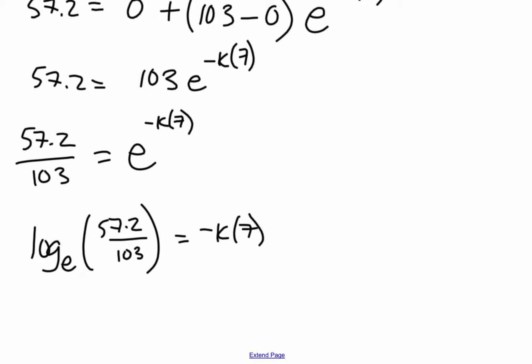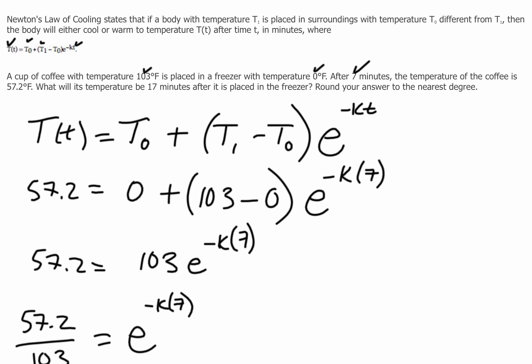So log base e is the same as ln, right? So I'm just going to hit my ln button. So ln of 57.2 divided by 103. So that's equal to negative 0.58818 equals negative k times 7. So I'll divide both sides by negative 7. So I'll divide that by negative 7. So my k is 0.084. We'll call that good. So that's my constant of cooling for this particular case.